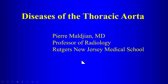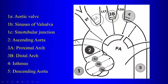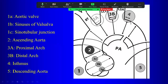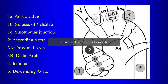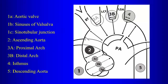Today we're going to talk about diseases of the thoracic aorta. Starting with the anatomy: we have the aortic valve at the junction with the left ventricle, then the sinuses of Valsalva above that, then the sinotubular junction where the aorta starts to narrow. Above the sinotubular junction is the ascending aorta, then the proximal and distal aortic arch where the great vessels come off. The isthmus is just distal to the left subclavian artery, just before the insertion of the ligamentum arteriosum, followed by the descending thoracic aorta.